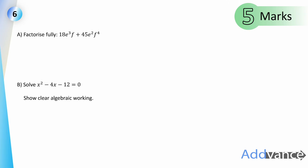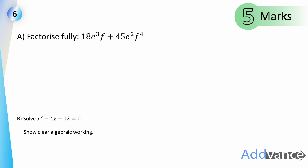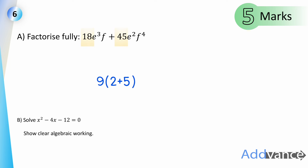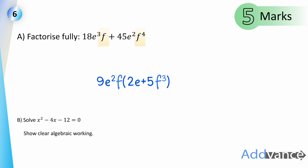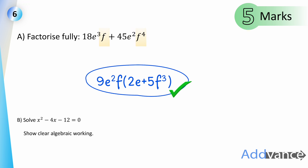Question six, part A: factorise fully 18e³f + 45e²f⁴. The HCF of 18 and 45 is 9; e³ and e² share e²; f and f⁴ share f. So the fully factorised form is 9e²f(2e + 5f³). That is the final answer.